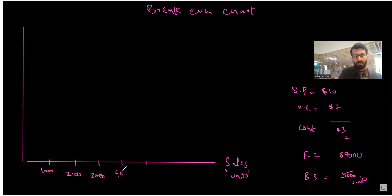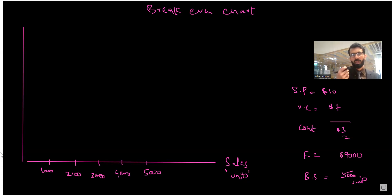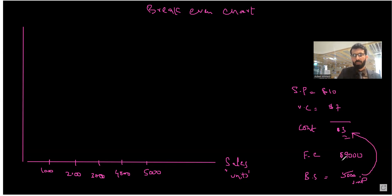I have already mentioned and will keep repeating — you don't have to draw the diagram in the exam. The diagram will be provided; you just have to interpret it. You may need to tell where the break-even point is, how much is the fixed cost, total revenue, profit, or loss. The total contribution generated will be $15,000, and fixed cost is $9,000, so there will be a profit of $6,000.